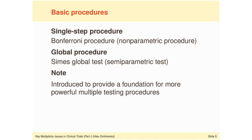The Bonferroni procedure is a non-parametric procedure used in clinical drug development, but it is not very efficient — in fact, it is the least efficient, most conservative way to perform a multiplicity adjustment. There are plenty of alternatives, and the Bonferroni procedure should in general be considered only as a last resort. The Symes procedure is a semi-parametric test, but it is not a multiple testing procedure — it cannot be used for examining individual null hypotheses. It is simply a tool for building other multiple testing procedures.